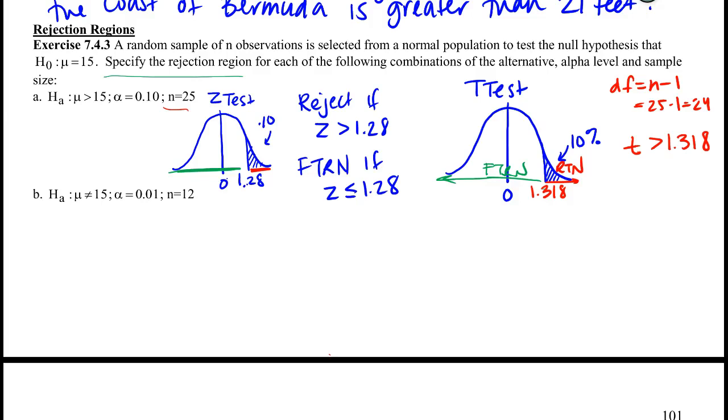Part B of this exercise has us do this again, except now we're dealing with a two-tailed test, not a right-tailed test. So if we're talking about the Z, we want the area in both of those tails to be less than a total of 0.01, which means an individual tail will have 0.005 in it.